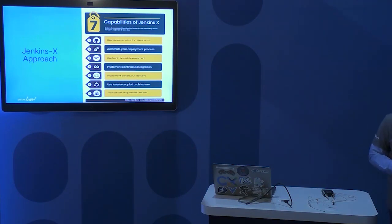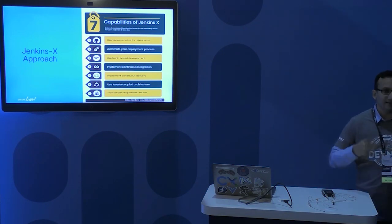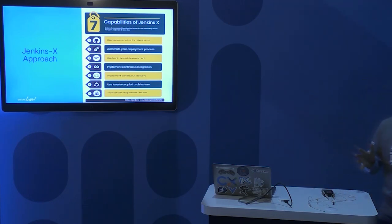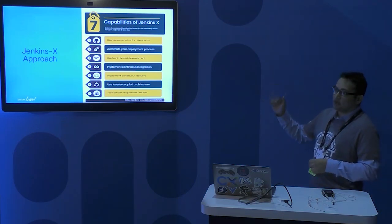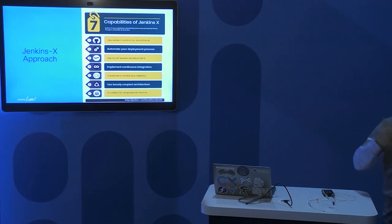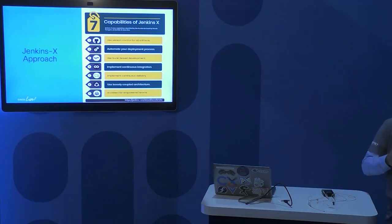Next is to automate your deployment process. Jenkins X gives you out of the box the entire CI/CD pipeline and the webhooks required, so you are free to focus on your actual business problem rather than tying up the infrastructure. Next is to use trunk-based development. For those of you who do active development, think about the number of branches you have in your environment — you make a change, create a new branch, and that keeps spawning up.